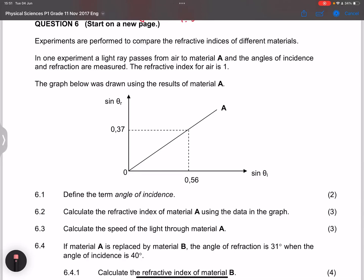And now we go on to question six. They say the experiments are performed to compare the refractive indices of different materials. They say in one of the experiments, a light ray passes from air to material A and the angle of incidence and refraction are measured. They say the refractive index of air is one.